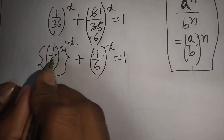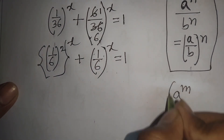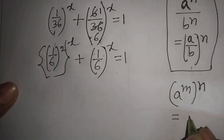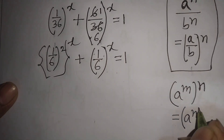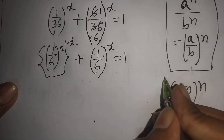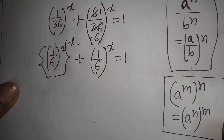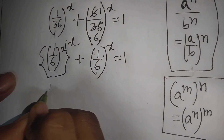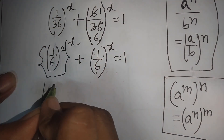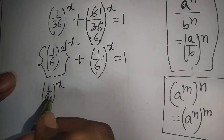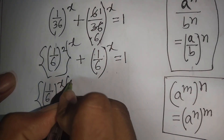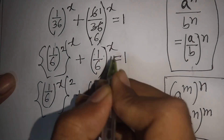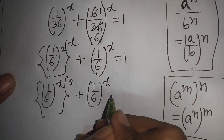Here we apply the rule that (a^m)^n = a^(mn). So we can write (1/6)^x raised to the power 2, plus (1/6)^x, is equal to 1.